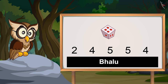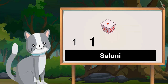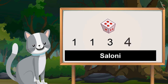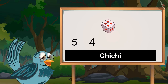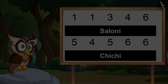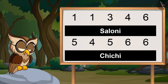One, one, three, four, five, five, six, six. So Chichi and Saloni got these numbers on the dice.